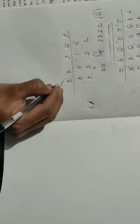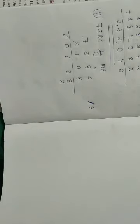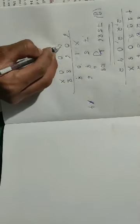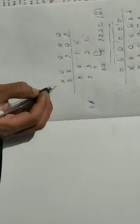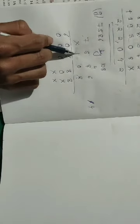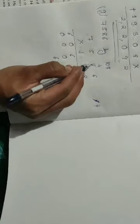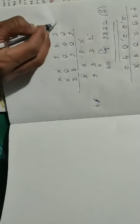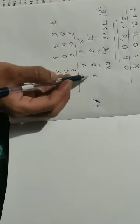Now next we multiply by 0. Before starting, put 1 cross. 0 times 6 is 0, 0 times 8 is 0, 0 times 5 is 0, 0 times 7 is 0. With 0 we are finished. Now multiply by 1. Put 2 crosses because we are on the next step — and if there were one more number you would put 3 crosses. So: 1 times 6 is 6, 1 times 8 is 8, 1 times 5 is 5, 1 times 7 is 7.